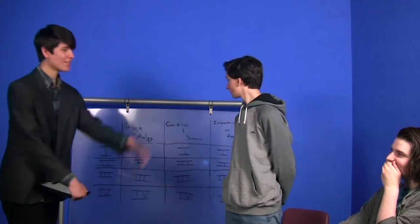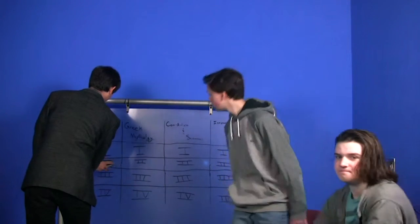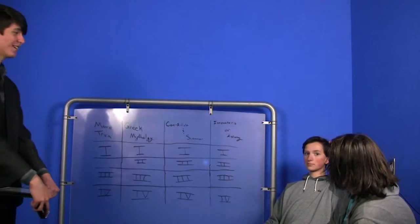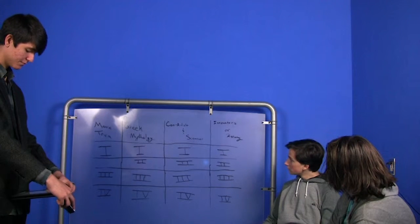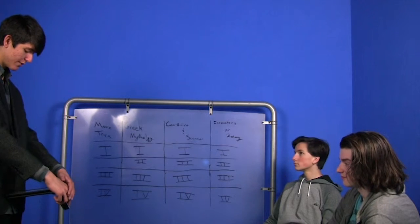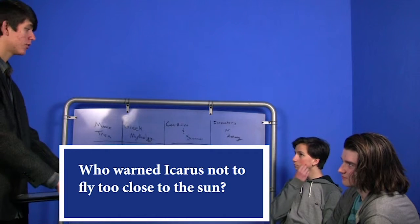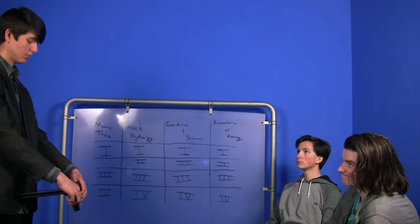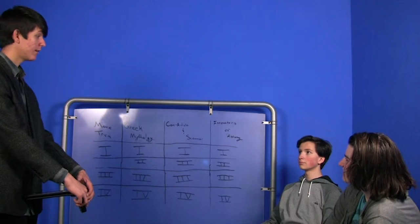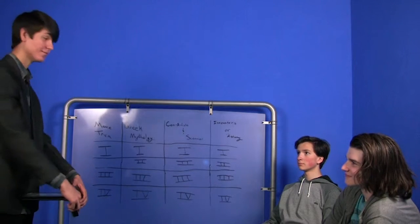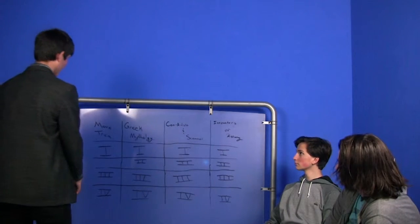Okay. Now, since you got it wrong, Jackson, please choose a subject and a point. I'll take Greek Mythology for two. Greek Mythology for two. Who warned Icarus not to fly too close to the sun? His dad. That is correct. His father, Daedalus.